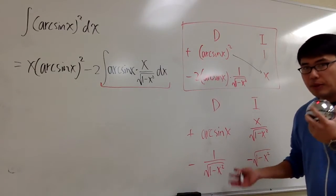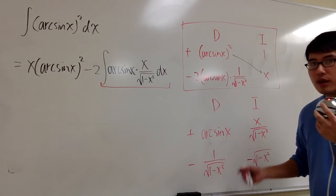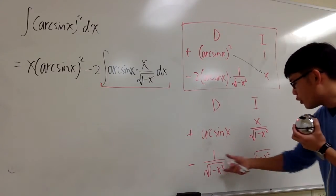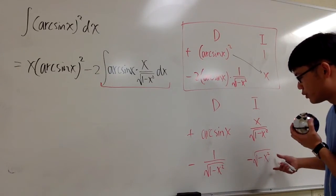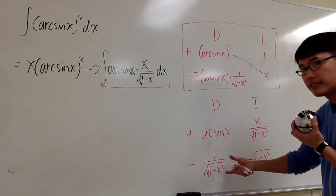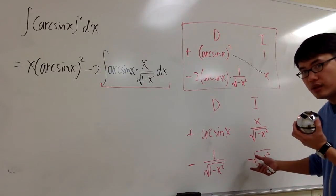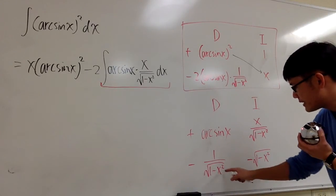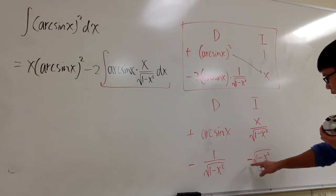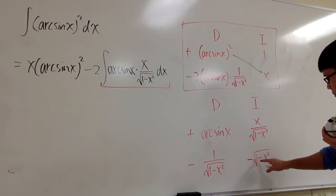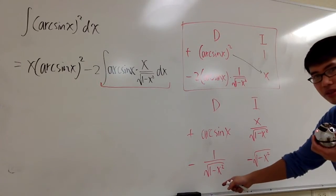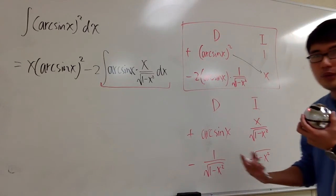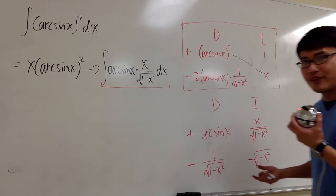Should we stop or keep going? Remember, the second situation is: if the product of each row is something you can integrate, check the product here — 1 over square root of 1 minus x squared times negative square root of 1 minus x squared. They cancel out, so the product is just 1. We can totally integrate 1, so we stop right here.